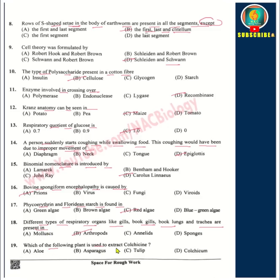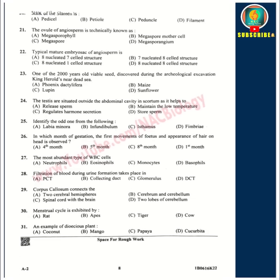Which of the following plants is used to extract colchicine? Option D — Colchicum. Question number 20: The stalk of the stamen is called the filament. 21st question: The ovule of angiosperms is technically known as megasporangium. A typical mature embryo sac is an 8-nucleated, 7-celled structure.